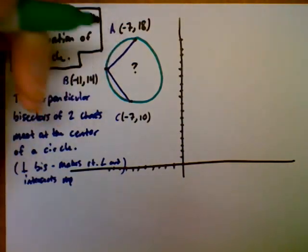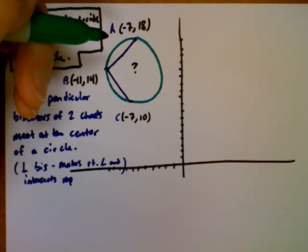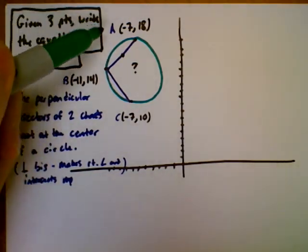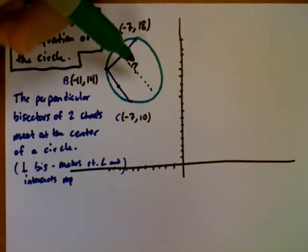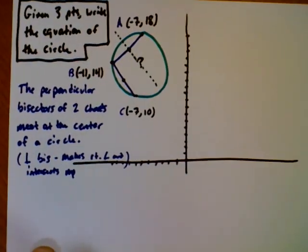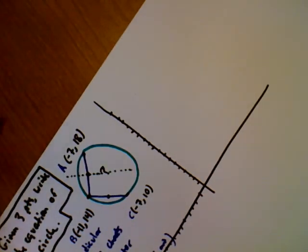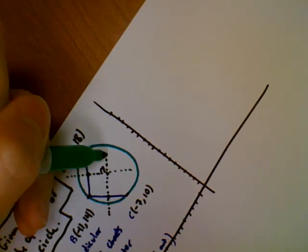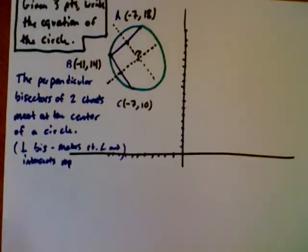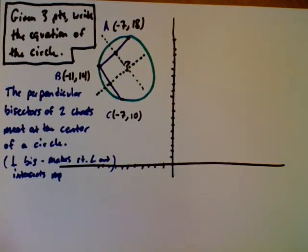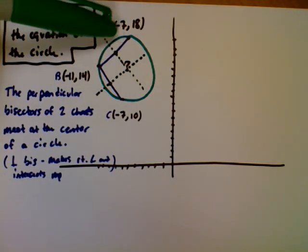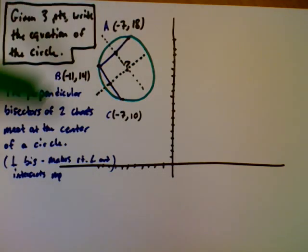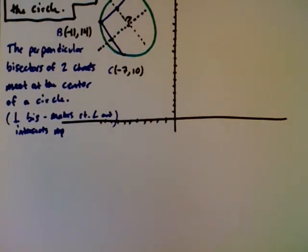To find the perpendicular bisectors, I need the midpoint of AB and then draw a perpendicular line through it. I'll sketch that midpoint, then a perpendicular line going through it. You can see it will go through the center of the circle. We can find the equations of these lines because we know a point — the midpoint — and the slope, since it's perpendicular to the chord's slope.